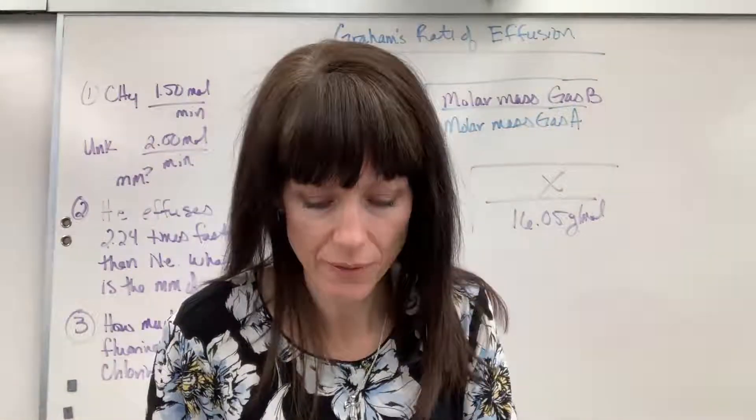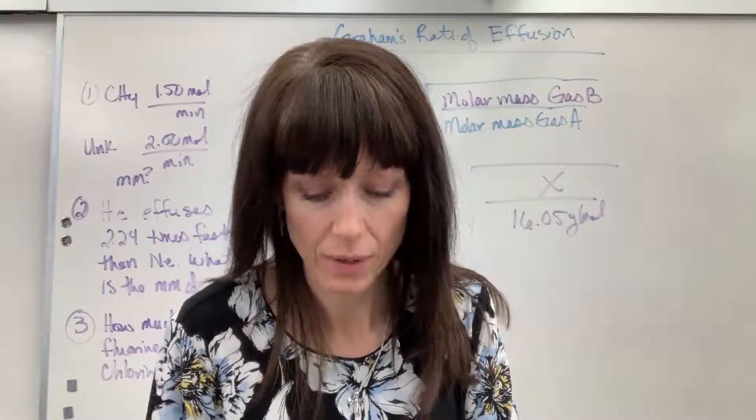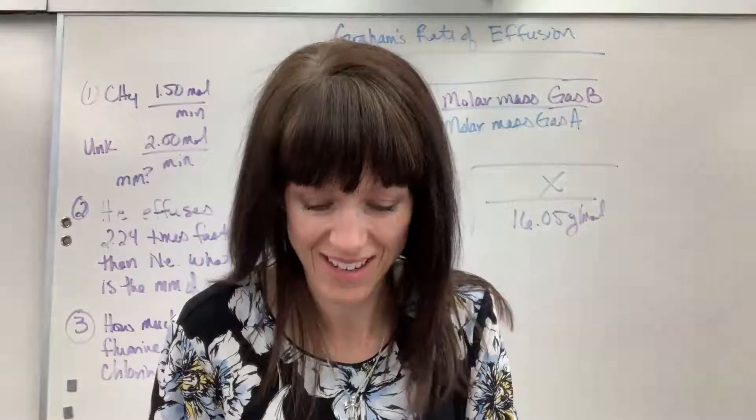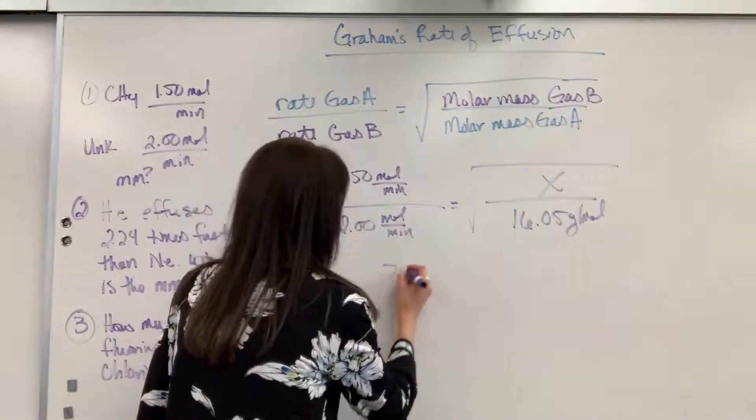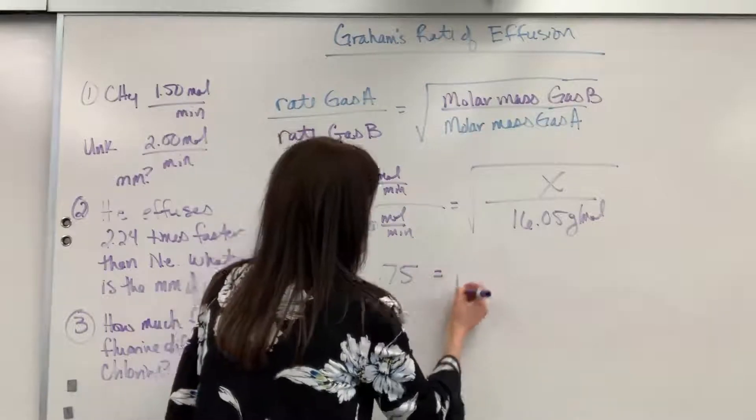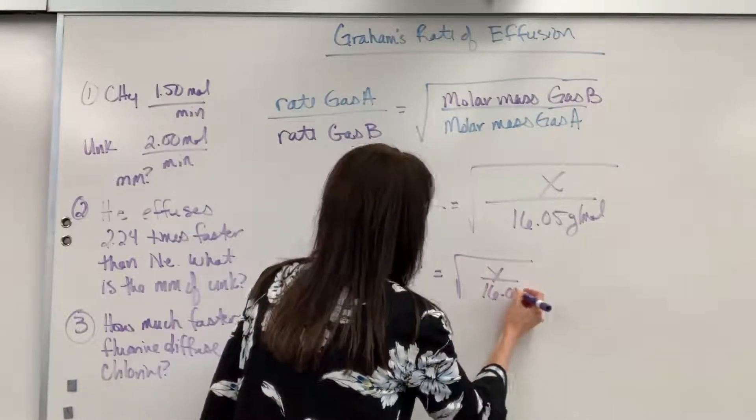So, we're going to get a 0.75. Let me make sure here. I don't want to make a mistake on the camera. Yeah, 0.75. So, we're going to get 0.75 equals square root x divided by 16.05.